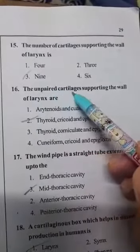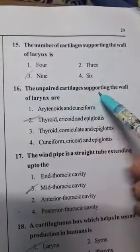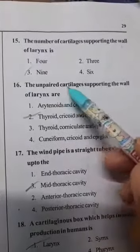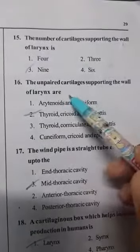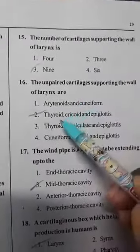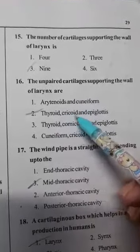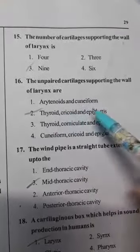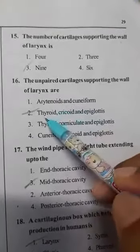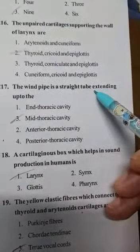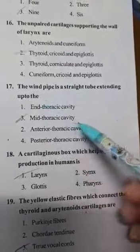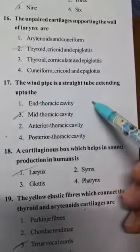The unpaired cartilages supporting the wall of the larynx are thyroid, cricoid, and epiglottis.